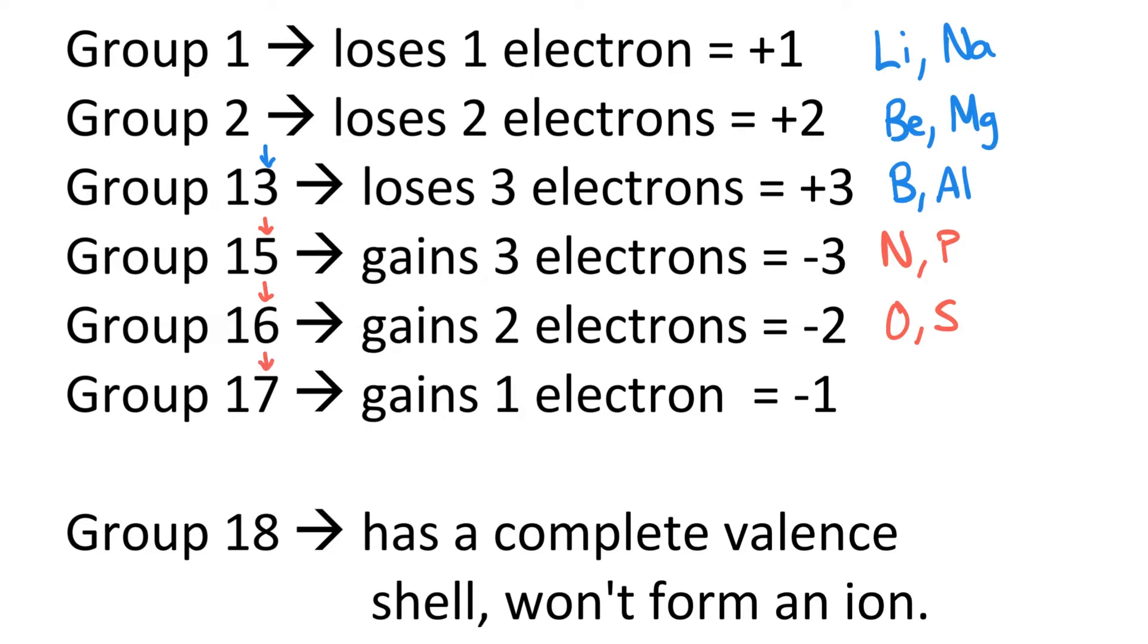Group 17 has seven valence electrons. It's way easier for them to gain one electron to have an overall -1 charge. Fluorine and chlorine are two examples of group 17 elements.